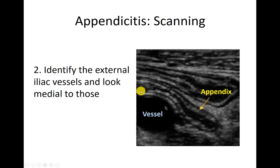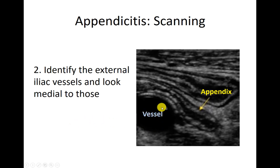This is what bowel looks like — a layered structure that's hyperechoic with some hypoechoic inside it. The key to the appendix is that it's blind-ended, meaning it terminates at some point. So if you identify this vessel, follow it and make sure it comes to a circle — a blind end. Another loop of bowel, by contrast, would just keep making a tubular shape and never finish with a circle at the end.